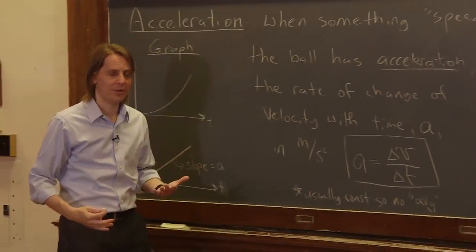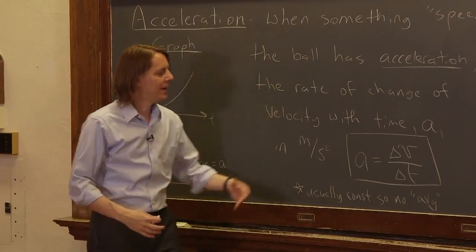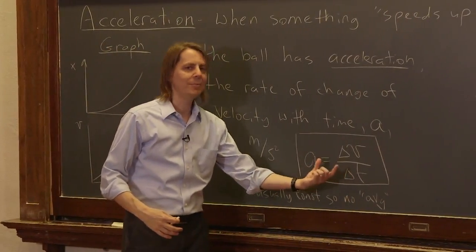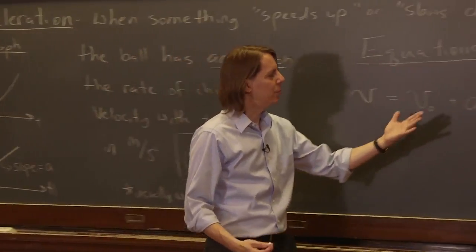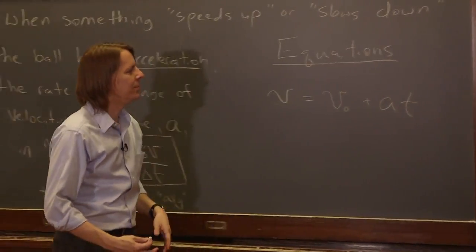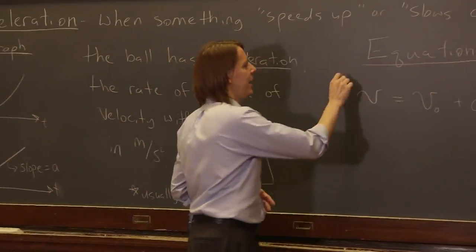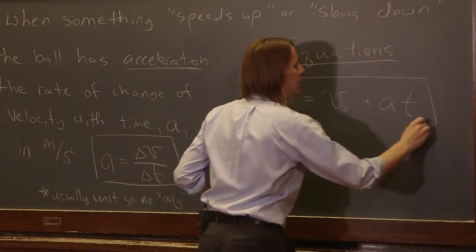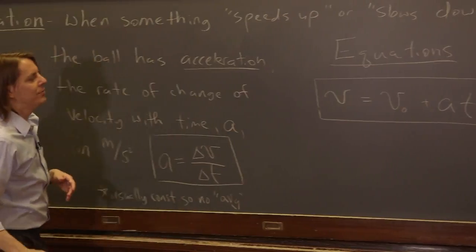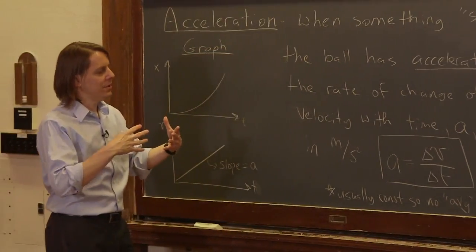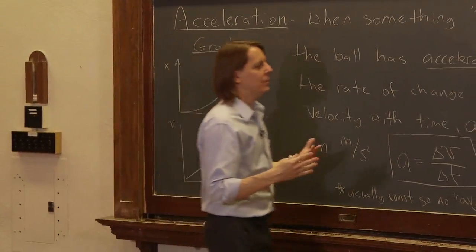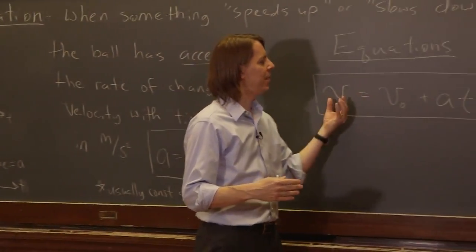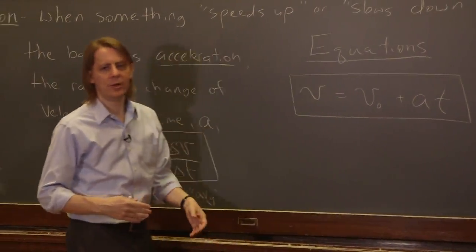Where again, technically it's the average velocity, but since it's always constant, we leave that off. And delta T technically is T minus T naught, but T naught really is always zero. We always put T naught at the origin. So just like X is X naught plus V T, that's how the position increases with velocity. V equals V naught plus A T, this is how the velocity increases due to acceleration.